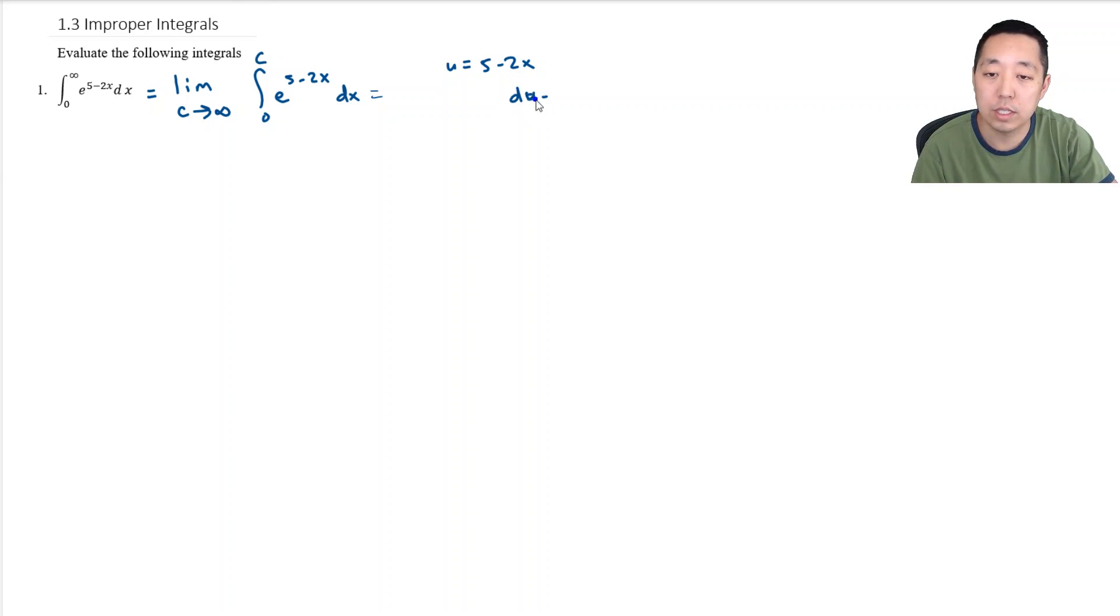There's going to be a negative 1 half factor. So this is going to be the limit c goes to... Let's do this integral separately. I'm just going to make this as a sub problem. e to the 5 minus 2x dx is going to be negative 1 half e to the 5 minus 2x evaluated from 0 to c.